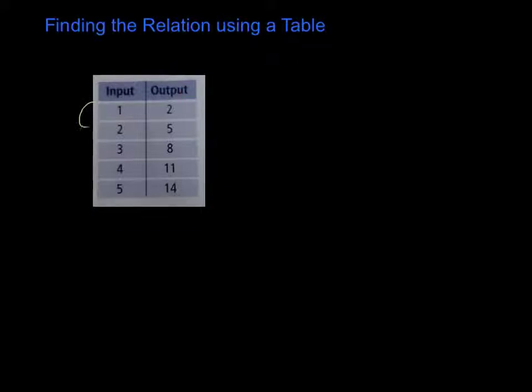So I'm going to start with my input side and see what the relationship is between these. To get from 1 to 2, I'm adding 1. From 2 to 3, I'm also adding 1. From 3 to 4, I'm adding 1. And from 4 to 5, I'm adding 1. Let's look at our output side. To get from 2 to 5, I'm adding 3. To get from 5 to 8, I'm also adding 3. So I'm seeing a pattern developing. To get from 8 to 11, I'm adding 3. And 11 to 14, I'm adding 3.